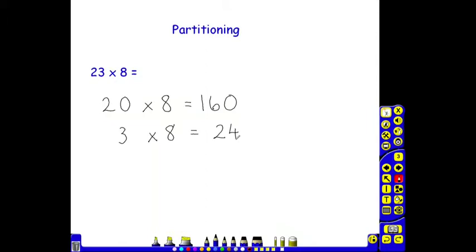I then need to recombine these two answers to get the final answer. So adding together the 160 and the 24 gives an answer of 184. So 23 multiplied by 8 is 184.